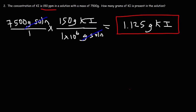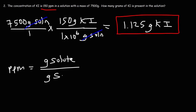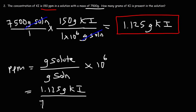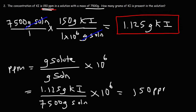Now let's confirm that this answer is correct by recalculating the ppm concentration. ppm is the mass of solute in grams divided by the mass of the solution in grams, times 10 to the 6. The grams of solute is 1.125 grams of KI, and the grams of solution is 7,500 grams. So 1.125 divided by 7,500, times 1 times 10 to the 6, is indeed 150 ppm, confirming our answer is correct.